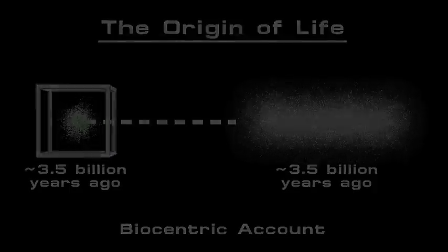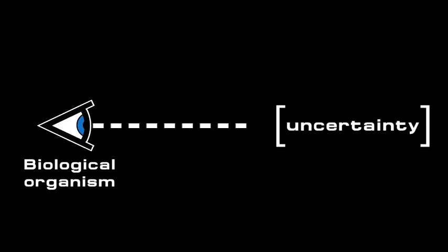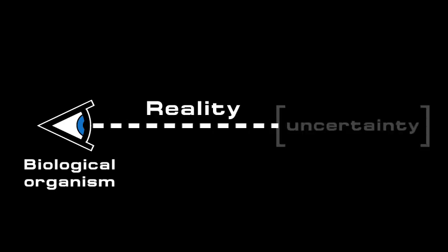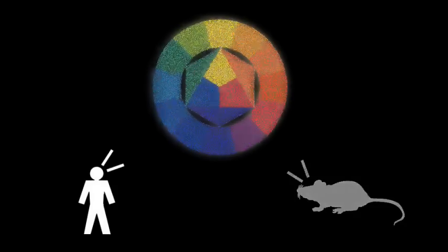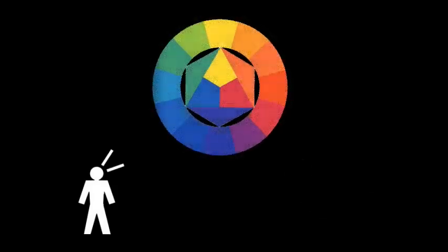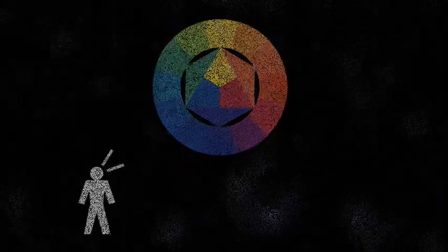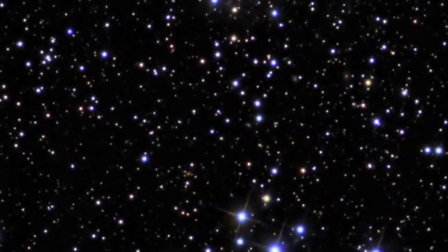In this theory, observation by any biological organism is what turns uncertainty into reality. If experiments show that animals and humans really are constantly resolving little pieces of the physical world, it could mean that the universe has been evolving in a direct parallel with life for its entire existence.